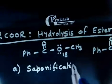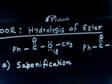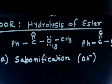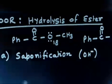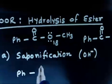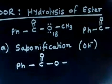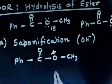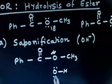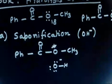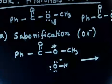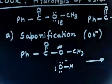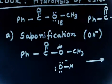Saponification is basically hydrolysis of an ester in basic medium. So in basic medium, in the presence of OH⁻, we call it saponification. So we have PhC(=O)O*CH₃ — where that oxygen is the labeled oxygen — and then we have OH⁻. Now, what can this OH⁻ do in the first step? Let us do this one.